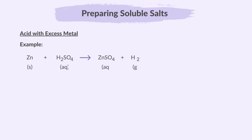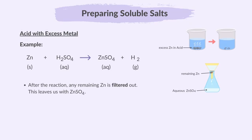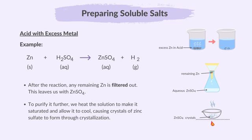Let's look at an example. Zinc sulphate can be made by reacting dilute sulphuric acid with zinc. The zinc metal reacts with the sulphuric acid and bubbles of hydrogen are produced until all the sulphuric acid is used up. Since we used excess zinc, any remaining zinc must be filtered out. That leaves us with zinc sulphate solution — the salt we are preparing. We then heat the solution to make it saturated and leave it to cool so that crystals of zinc sulphate form through crystallization.